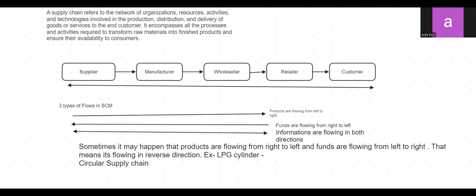Funds are flowing from right to left. When the retailer sells a product to the customer, the customer pays money to the retailer. The retailer keeps their share and sends the remainder to the wholesaler, who keeps their share and passes the rest to the manufacturer, who then pays the supplier after keeping their own share.